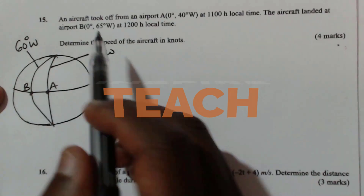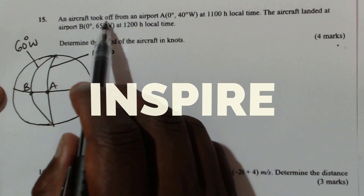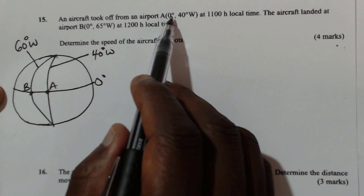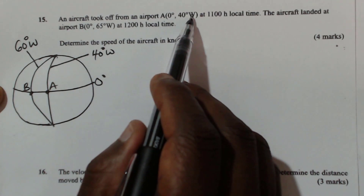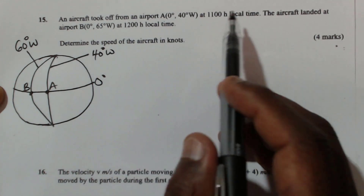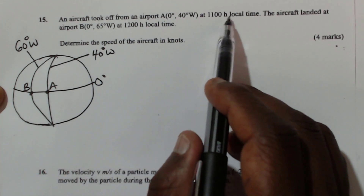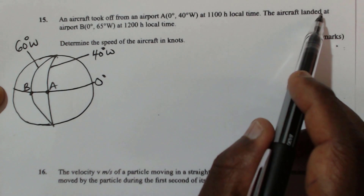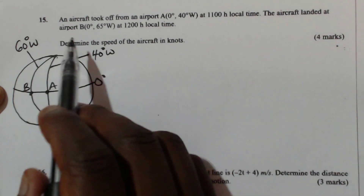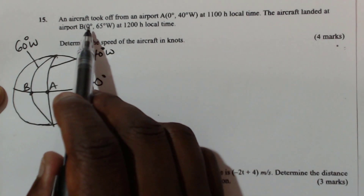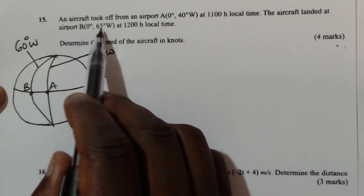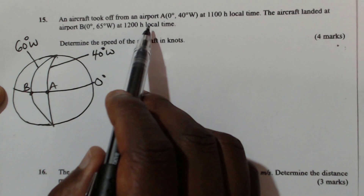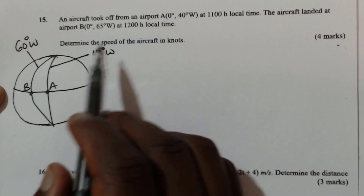Question number 15. An aircraft took off from airport A, at 0 degrees, 40 degrees west, at 11:00 hours local time. The aircraft landed at airport B, at 0 degrees, 65 degrees west, at 12:00 hours local time.